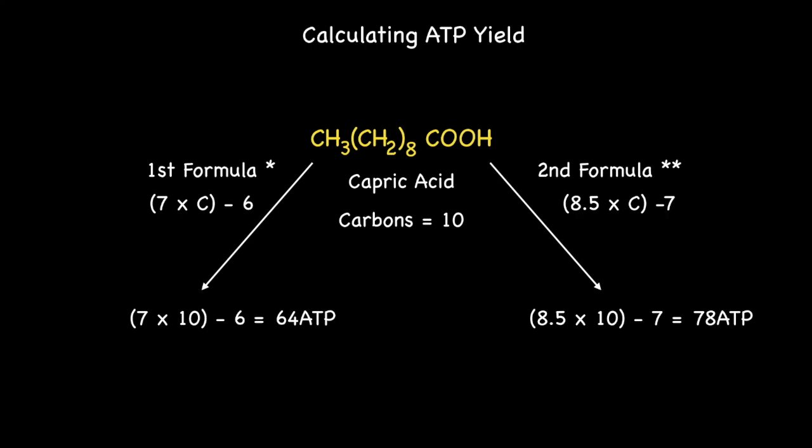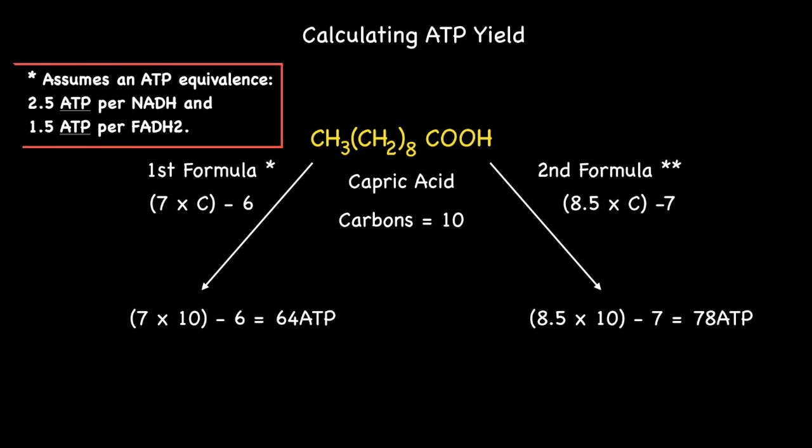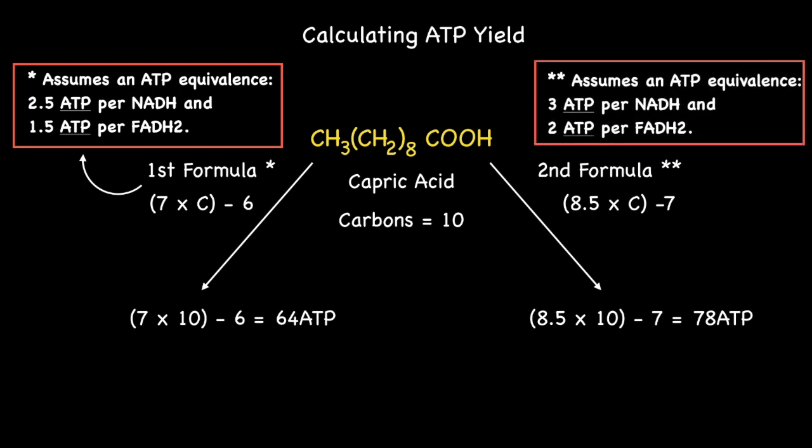Recall how the first formula assumes an ATP equivalents of 2.5 ATPs per NADH and 1.5 ATPs per FADH2, while the second formula assumes the rounded up version of these numbers, i.e. 3 ATPs for NADH and 2 ATPs for FADH2.